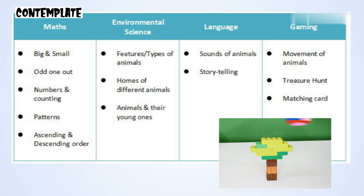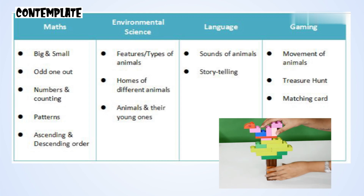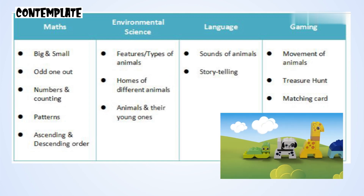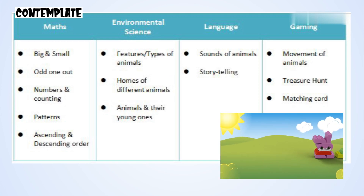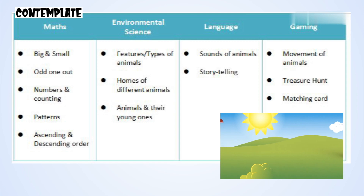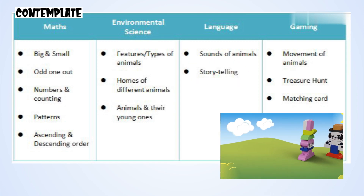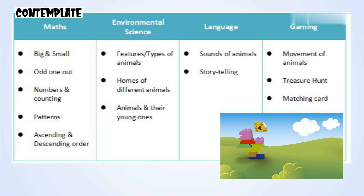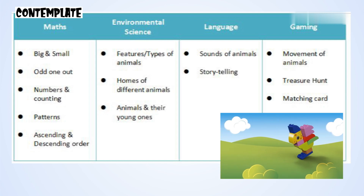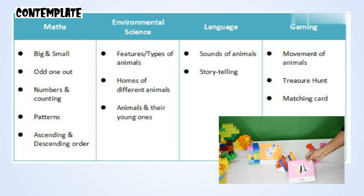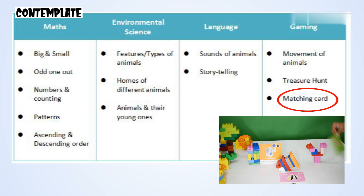In science, children will learn features and types of animals, homes of different animals and their babies, and that a bird lives on a tree. In the language portion, we will cover sounds of different animals and storytelling. In the gaming portion, different movements of animals can be taught, along with a treasure hunt game and a matching card activity.